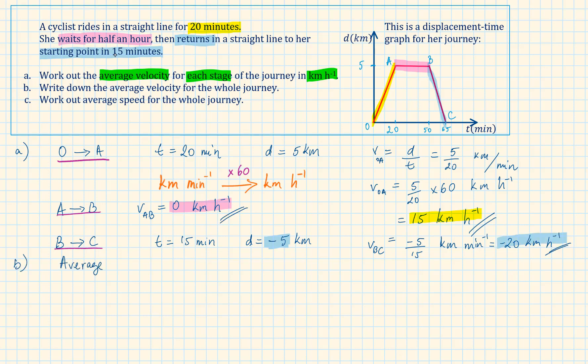The average velocity of the whole journey is equal to the total displacement over the total time. The total displacement is 0. It started at 0 and ended up back at 0. And the total time taken is 65. Hence, the average velocity is equal to 0 km per hour.